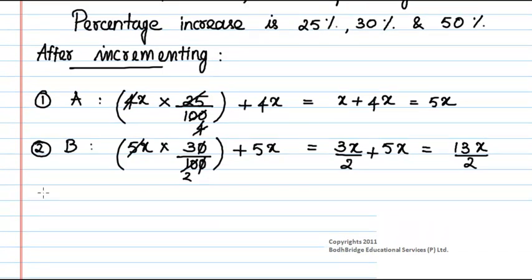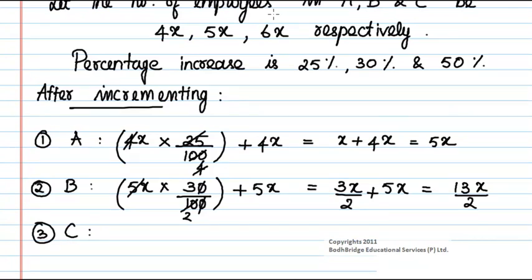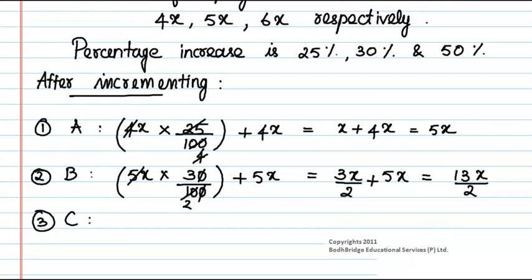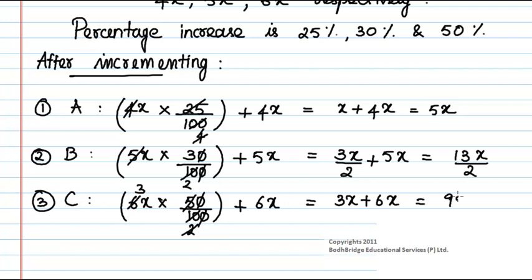Company C has current employees 6x and a 50% increase. So 6x × (50/100) + 6x. Simplifying by canceling and factoring, we get 3x + 6x = 9x.